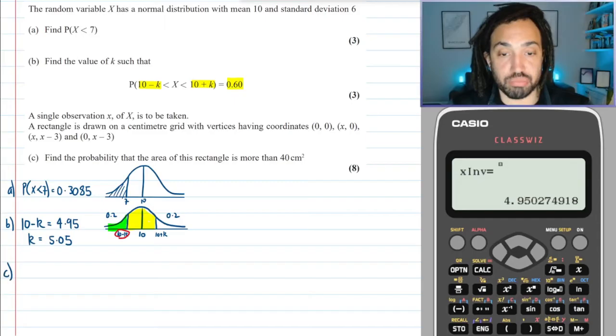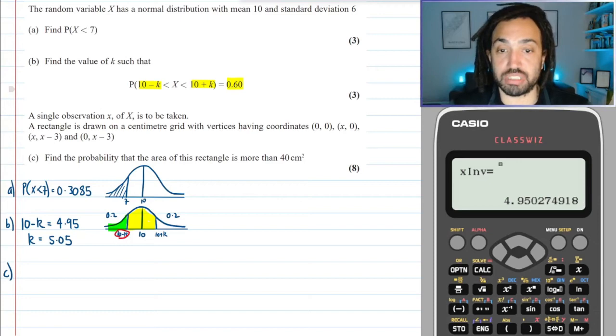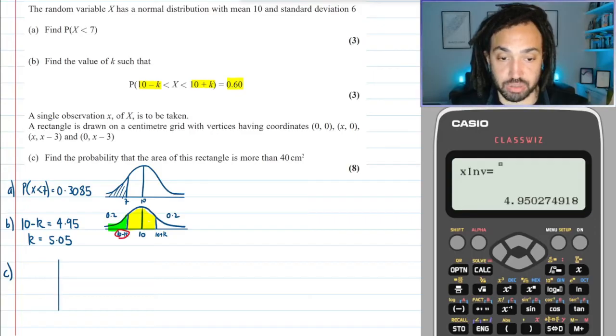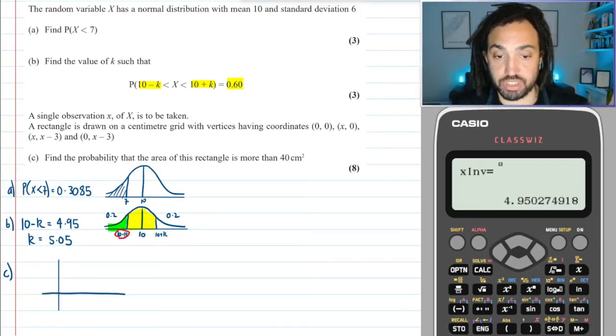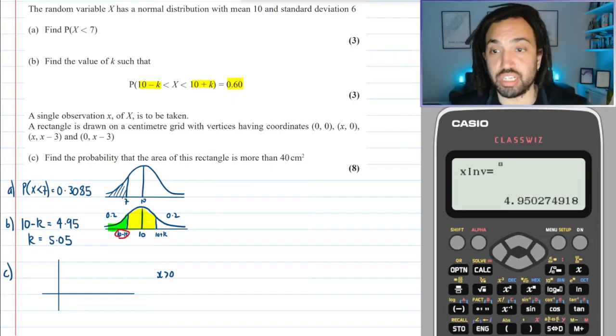Okay, onwards and upwards to part (c). It says a single observation of X is to be taken and a rectangle is to be drawn with these coordinates. Find the probability that the area of the rectangle is more than 40. Right, so I'm going to first off just assume for the sake of my diagram that X is greater than 0.